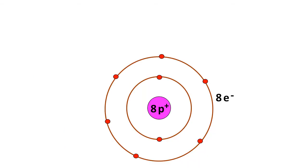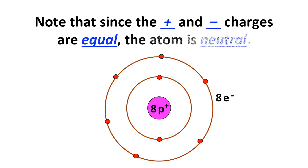So here's a simplified version of oxygen, typical atom, eight protons in the nucleus, eight electrons around it. Note the positive charges due to the protons and the negative charges due to the electrons are equal. Both are eight in this case, so the atom is overall neutral. And that's true for any atom of any element.